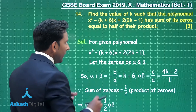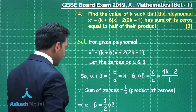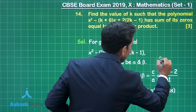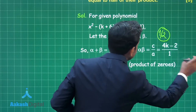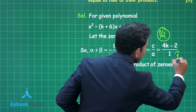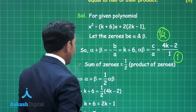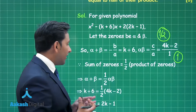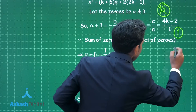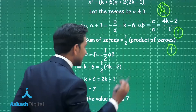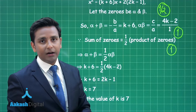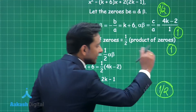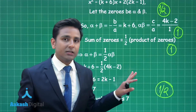Now the marking scheme for question 14: considering the zeros of the quadratic polynomial gives half a mark. Writing the relation between zeros and coefficients gives 1 mark as it is a very important step. Representing the given information mathematically gives another 1 mark, and obtaining the value of k = 7 in the calculation gives the remaining half mark.